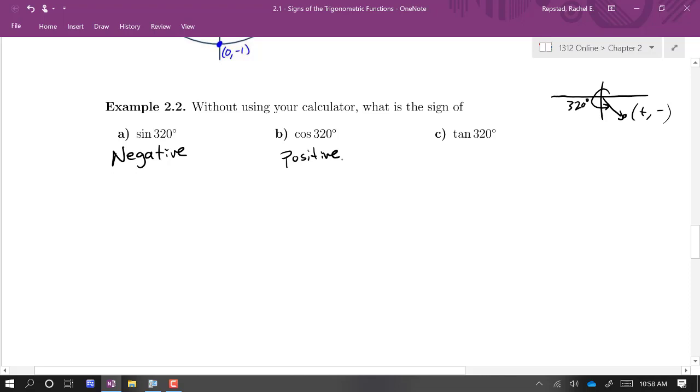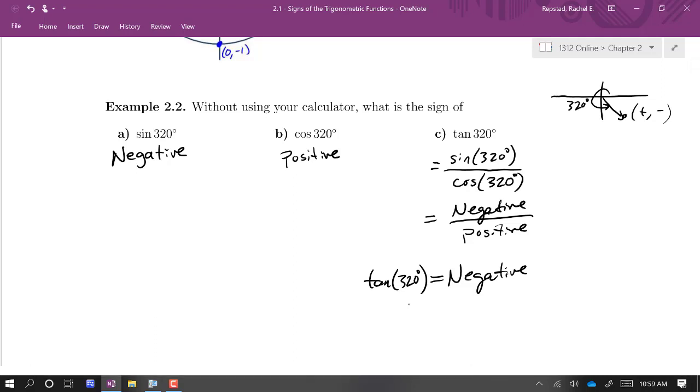Now tangent is not a coordinate, but if I remember how tangent is defined, it's the ratio of sine over cosine. And I just realized that tan of 320 degrees, this is sine of 320 over cosine of 320. So this is a negative divided by a positive, which means that tangent of 320 degrees is negative. And I can do that all without finding the actual values, and without plugging anything into my calculator.